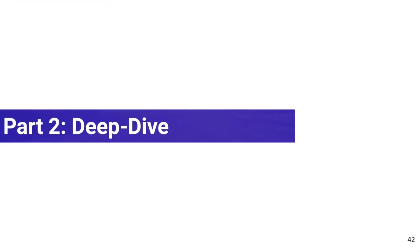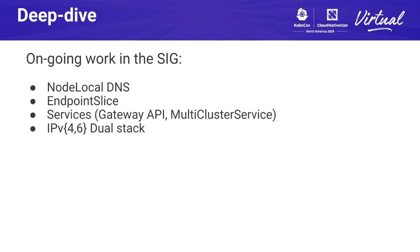Let's get into part two — a deep dive into new work going on in the SIG. In part two we'll talk about ongoing work: some things have reached GA stage, some are in alpha, some are in beta. Topics today include work on improving DNS scalability, improving endpoint API scalability, improving services expressibility and orthogonality, being able to map services and express more complicated role-based delegation of responsibilities, and finally IPv6 dual stack.